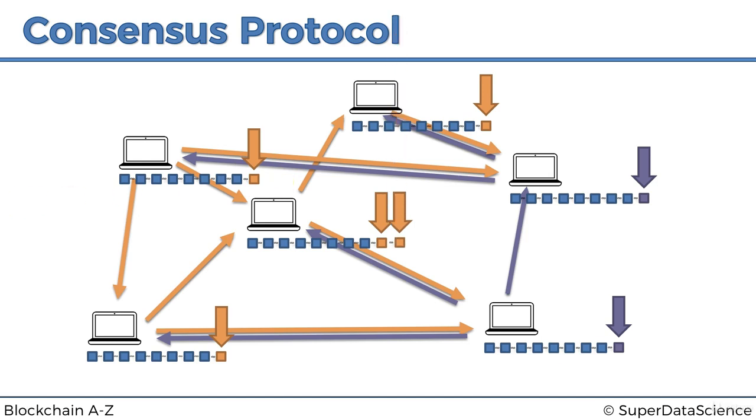So what will happen probabilistically is one of the computers in the orange chain will come up with a block, and then this block will be spread across the network.